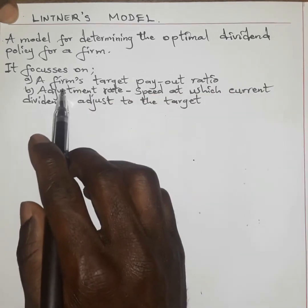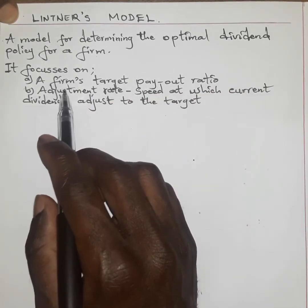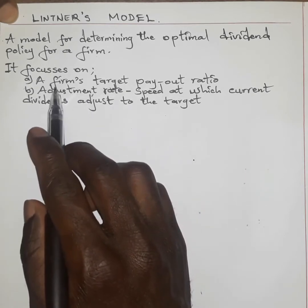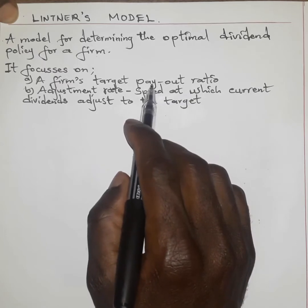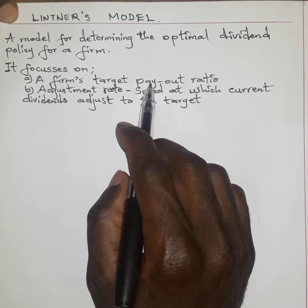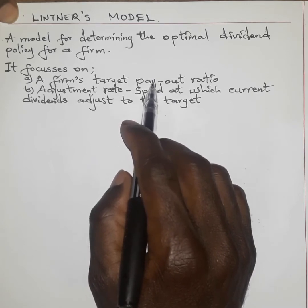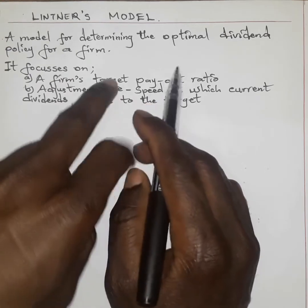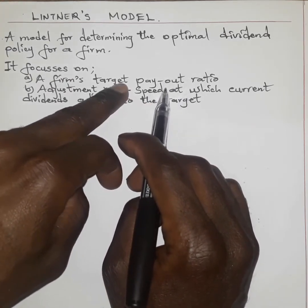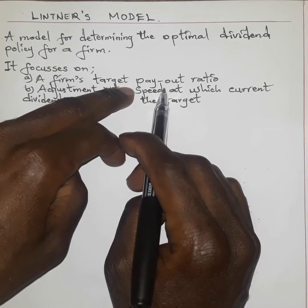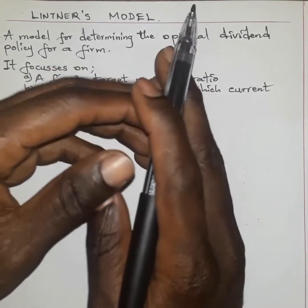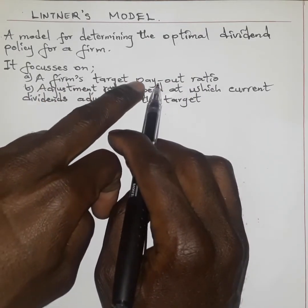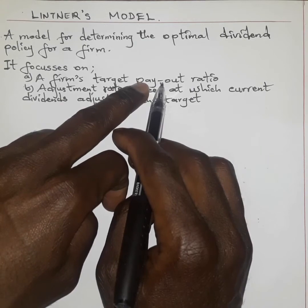This particular model focuses on two major factors. First, you talk about the firm's target payout ratio — what does the firm target to give out as payment of dividends. The target payout ratio will normally depend on the earnings; in other words, as the earnings for this particular firm increase, the payout ratio is also expected to increase.